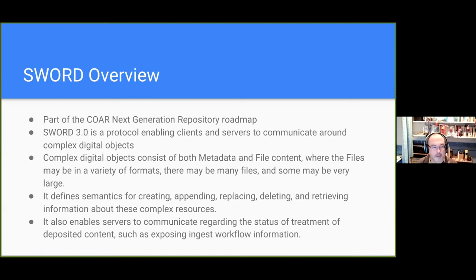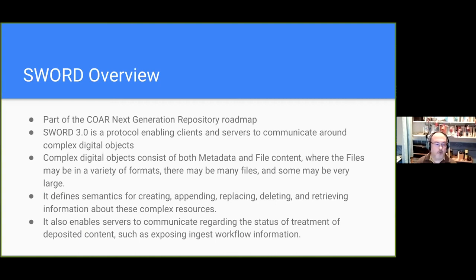It was designed as a protocol for automating the deposit of originally papers into repositories. It's part of the next generation repository model and because it's so ubiquitous, SWORD version three, along with all the previous versions — there's a new version about every five or six years — is a protocol enabling clients and servers to communicate around complex objects, moving them back and forth. Complex objects consist of mostly metadata and file content, and it defines basic operations for remotely creating, appending, replacing, deleting, and retrieving information about these resources.